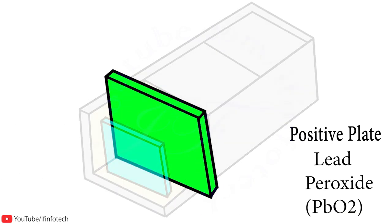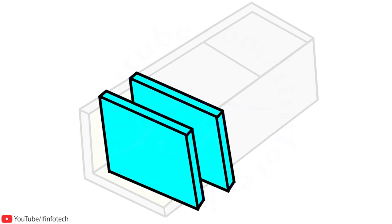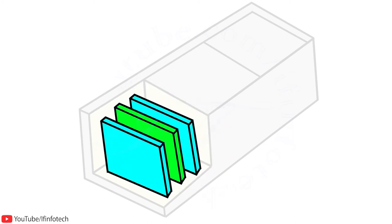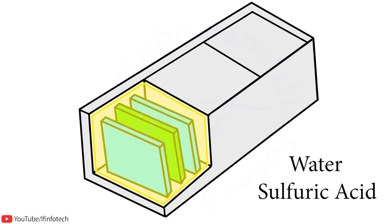The positive plate consists of lead dioxide and negative plate consists of spongy lead. These two plates are separated using separator which is insulating material. This total construction is kept in hard plastic case with electrolyte. The electrolyte is water and sulfuric acid.